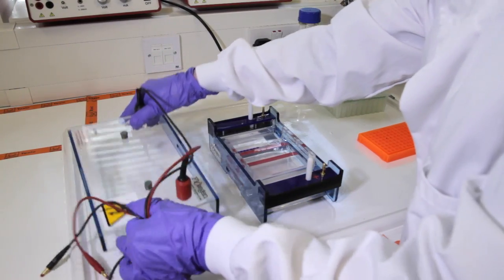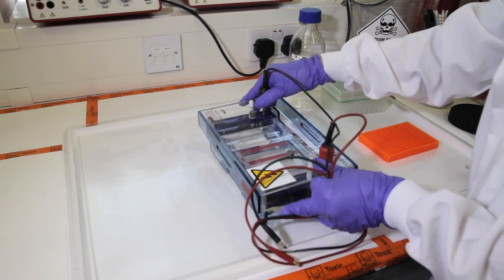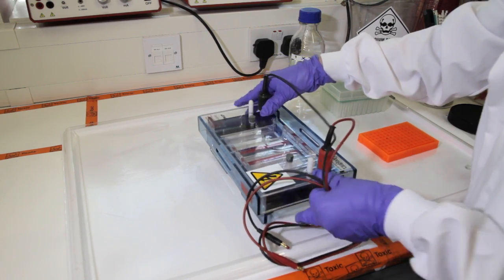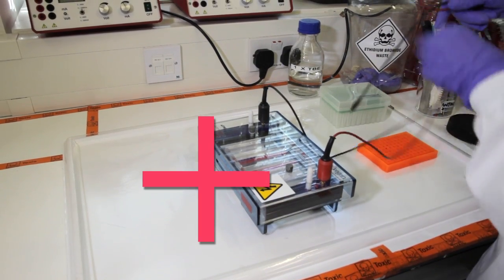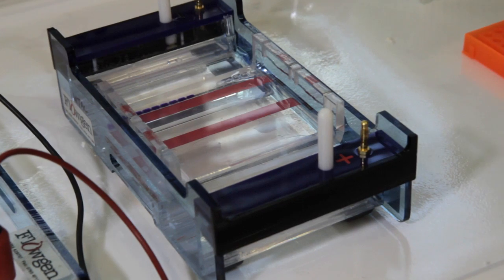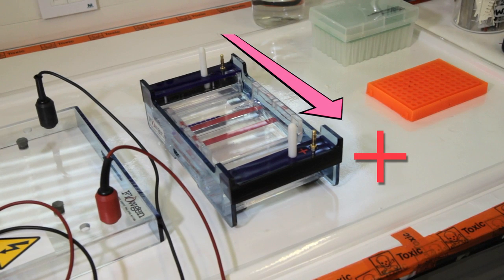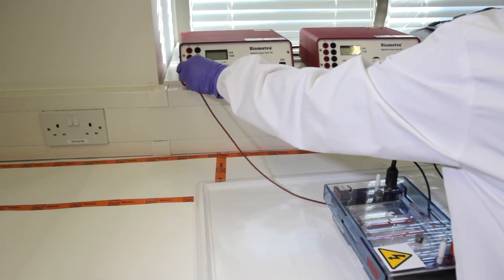When you've finished loading, put the lid on the gel setup. Remember that DNA is negatively charged, and will travel towards the positive, or red, electrode. Double check that the orientation of the gel and electrodes is correct. Connect the leads to the power supply.